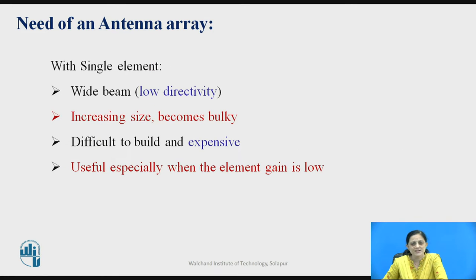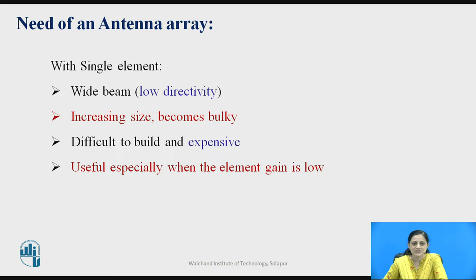What is the need of an antenna array? If a single element is used in antennas, there are disadvantages which can be overcome by using an antenna array. With the single element, we are getting a wide beam of the signal which gives a lower value of directivity.